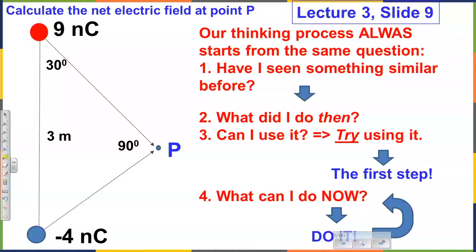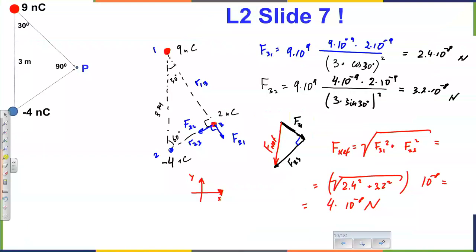Now we have seen this situation. We actually have it solved. We literally have found the magnitude of a net force acting on a charge placed at that point. So we don't have to repeat this again — we can just use that information. That's not what we are looking for in this situation. This is the net force. We need the net electric field. So now our brain starts searching for the connection between net force, net field, and the charge. If that search leads to the right equation, we're done.